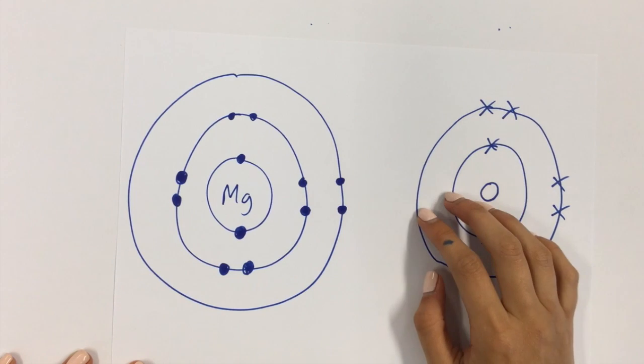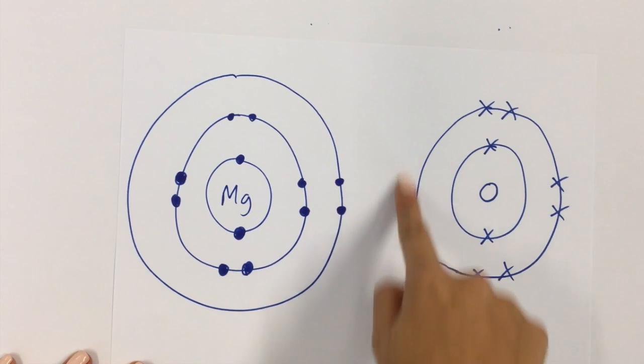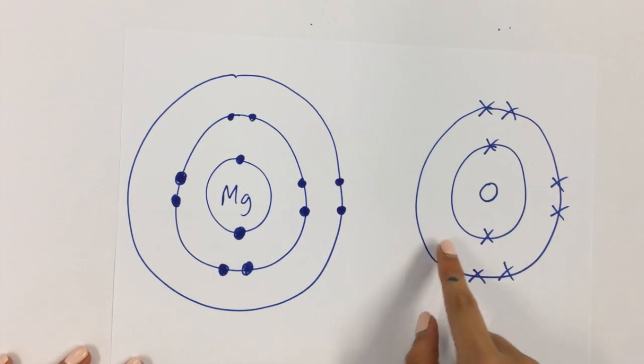That doesn't solve the problem this time. If I transfer 1 electron here, magnesium's still got 1, and oxygen's only got 7, so that doesn't solve the problem.